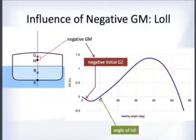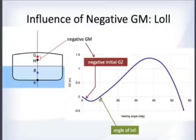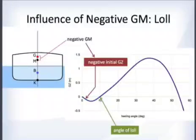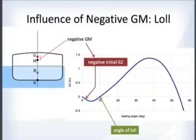If you have a negative GM, you get a negative initial GZ, which makes the GZ curve go negative before eventually coming back up. The ship seeks a new static equilibrium angle where GZ crosses zero again.